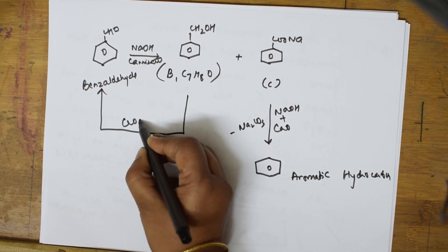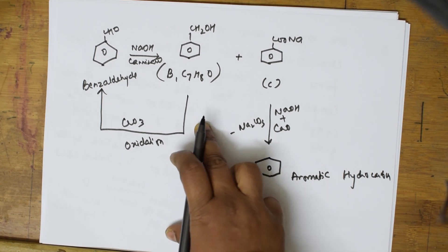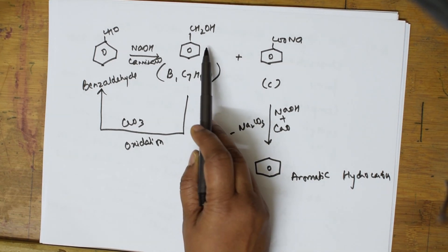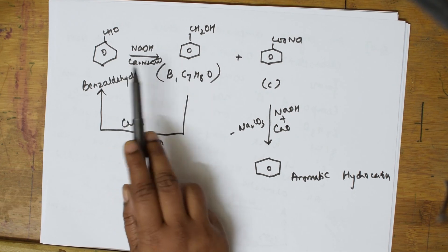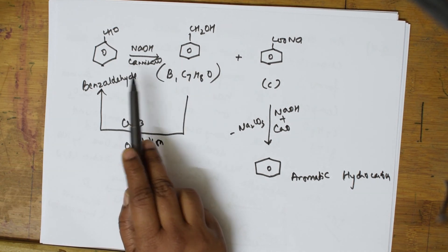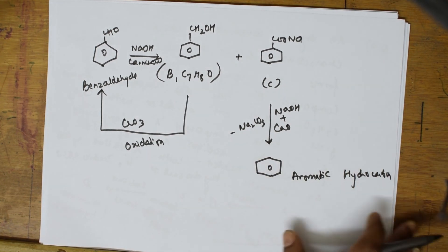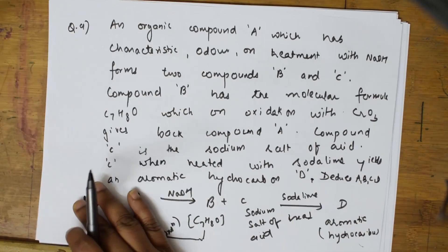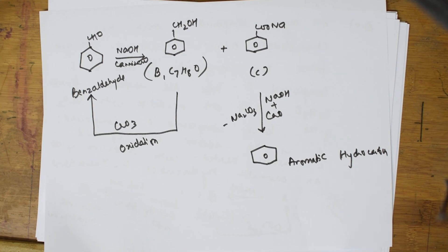Compound B (benzyl alcohol) treated with CrO3 oxidizing agent undergoes oxidation. Alcohols on oxidation give aldehydes, so benzyl alcohol oxidizes back to benzaldehyde — compound A. This confirms our analysis. Always write the summary of facts, pick one clue, and work through systematically.